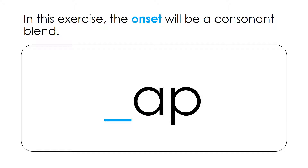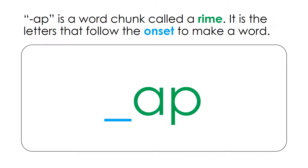In this exercise, the onset will be a consonant blend. 'App' is a word chunk called a rhyme. It is the letters that follow the onset to make a word.